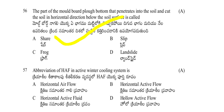HAF in active winter cooling system stands for: horizontal airflow, horizontal active flow, horizontal active fluid, or hollow active flow. The answer is horizontal airflow.